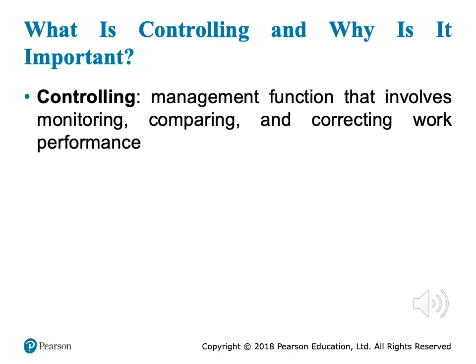Controlling is a management function that involves three things. The first is monitoring — we monitor the activities that the employees are doing. Then comparing: comparing what the employees are doing with the plan that we put in the planning phase — comparing actual work with what we have written. Step number three is correcting the work performance if we found deviation, to put the work back on track and make sure the work is going towards attainment of the organizational goal.